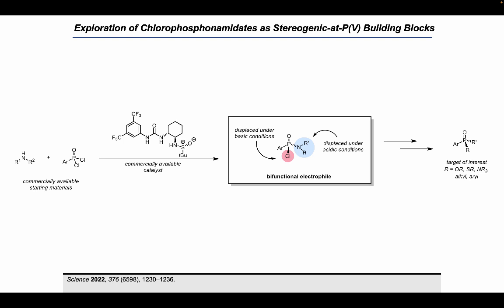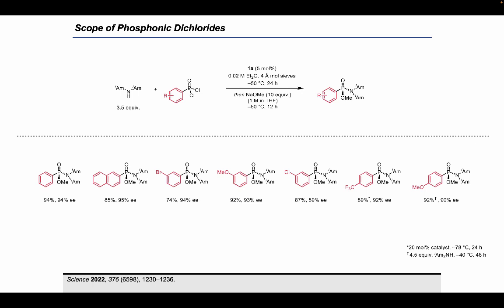These chlorophosphonamidate intermediates possess two orthogonally reactive leaving groups. The chloride is a reactive leaving group that can be stereospecifically displaced by a broad variety of nucleophiles. Additionally, the amino group on these building blocks can also serve as a leaving group: unlike amide nitrogen, the orbital overlap between nitrogen and phosphorus is poor, so the nitrogen is sp3-hybridized and quite basic. Therefore, this amino group can be protonated under acidic conditions and activated as a leaving group to undergo stereospecific displacement by alcohols. We hypothesized that chlorophosphonamidates could thus serve as bifunctional electrophiles and precursors for a broad variety of stereogenic-at-phosphorus molecules.